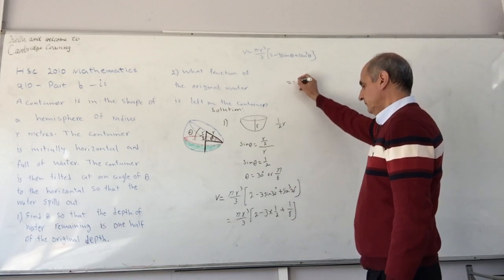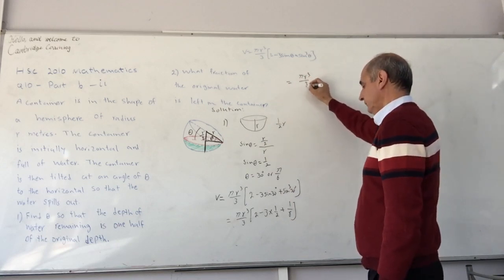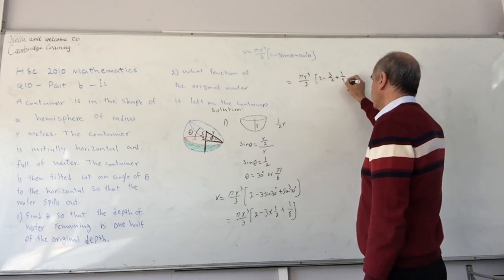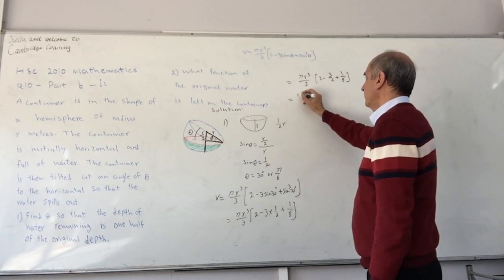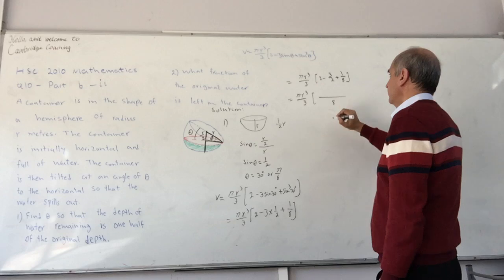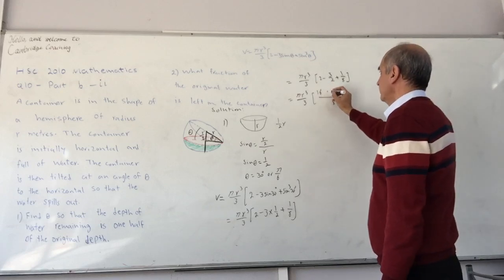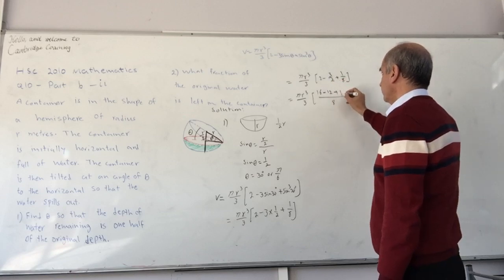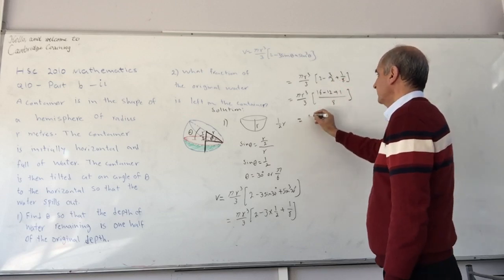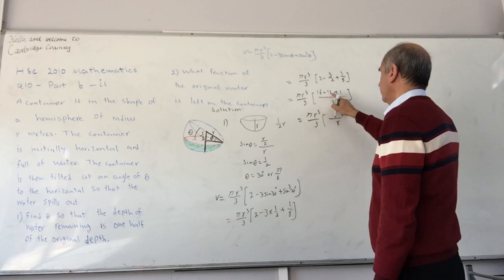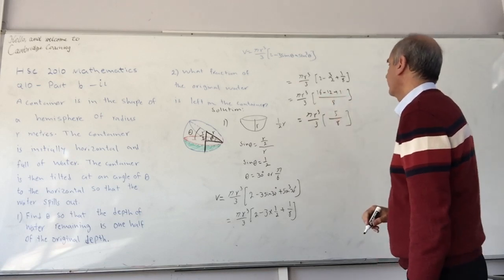That gives us pi r cubed on 3, 2 minus 3 on 2, plus 1 on 8, equal to pi r cubed on 3. I take 8 as my common denominator. So that becomes 16, minus 8 divided by 2 is 4, 4 times 3 is 12, plus 1, that is pi r cubed on 3. So that is pi r cubed on 3, 16 minus 12 is 4, plus 1 is pi r cubed on 3.